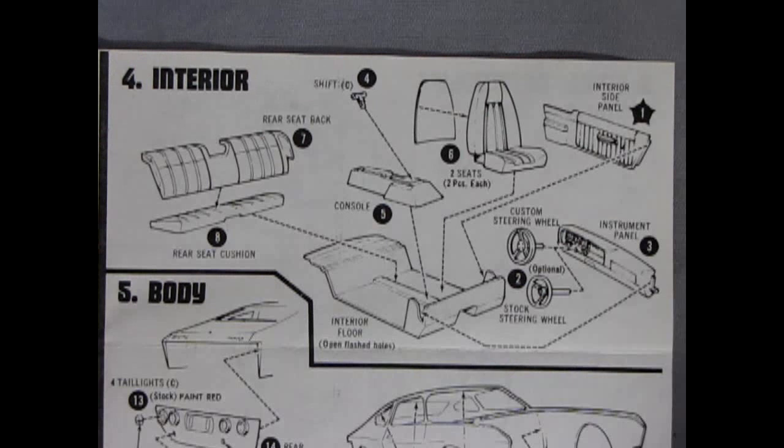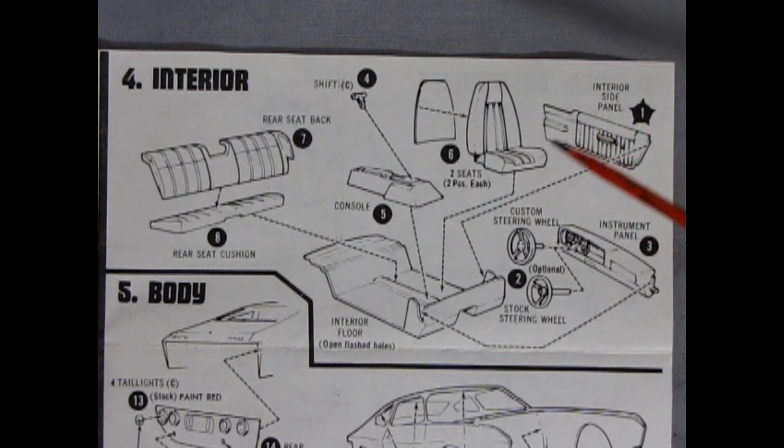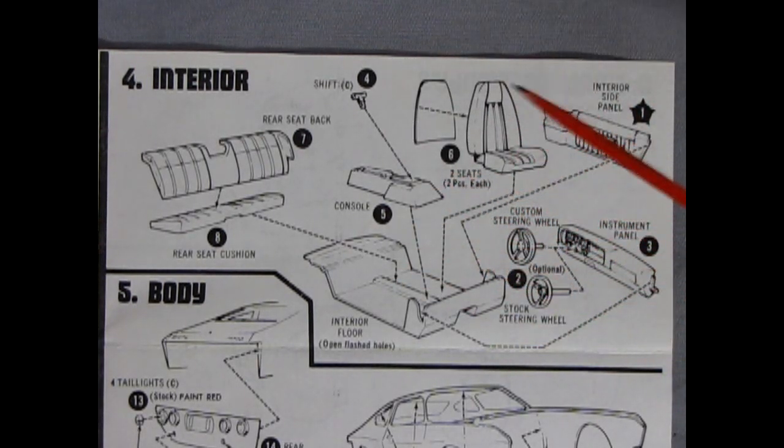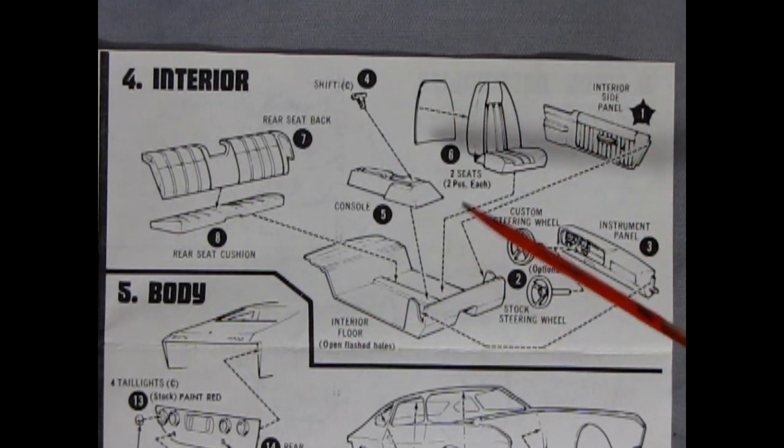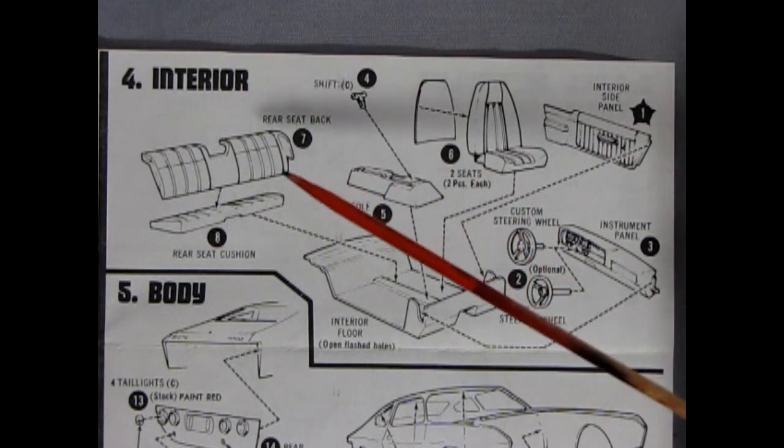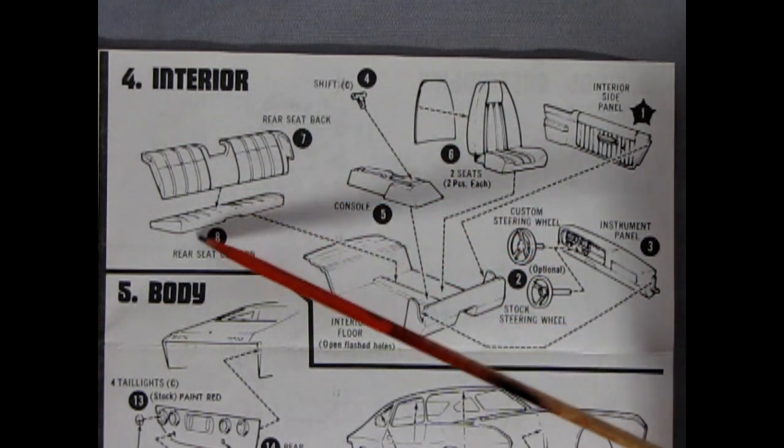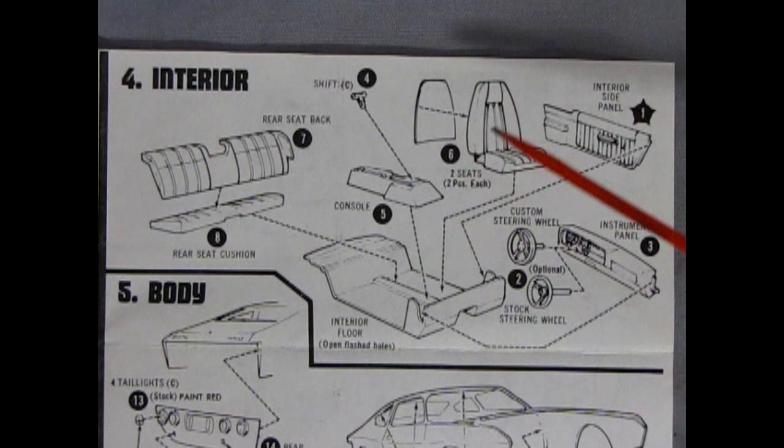Panel four shows our very groovy interior. And if you did see that Bobby Allison race car version of the Matador, you know that all of this was blanked out. Well, this is how the upholstery looks in the stock version. We have the rear seat back and seat cushion, a console, a shift lever, two-piece bucket seats,